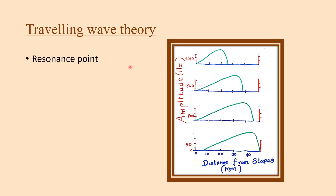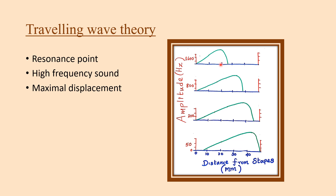The resonance point is the point on the basilar membrane where the wave form is initiated. Initially the wave amplitude is weak, then it grows stronger until it reaches a maximum at the resonance point. For high frequency sounds, the resonance point is close to the basal area. For low frequency sounds, the resonance point is near the apex, near the helicotrema.